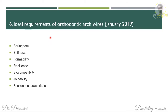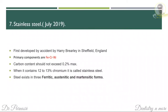Another short note is stainless steel. It was developed accidentally by Harry Brearley in Sheffield, England. The main components are iron, chromium and nickel. The carbon content should not exceed 0.2%. When the chromium content is 12 to 13%, it is called stainless steel. It exists in three forms: ferritic, austenitic, and martensitic. You can also write where each type of stainless steel is used.